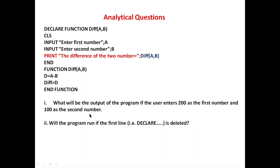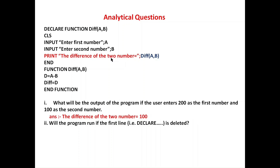What will be the output if the user enters 200 as the first number and 100 as the second number? So A = 200 and B = 100. We pass those values; the function receives them and computes D = A - B, that is 200 - 100 = 100, and returns D to the main module. Whatever is written in the PRINT statement will be the output, so the output will be: 'The difference of two number' then 'Result' then 100.